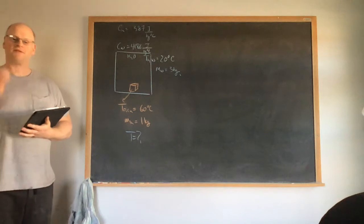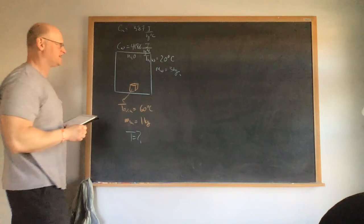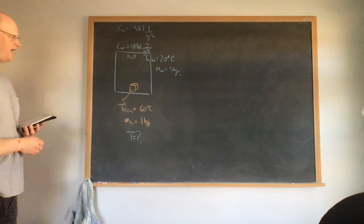The first example deals with specific heat. We have water with a mass of 3 kilograms and an initial temperature of 20 degrees Celsius. Into that we drop a piece of copper with an initial temperature of 60 degrees Celsius and a mass of 1 kilogram.